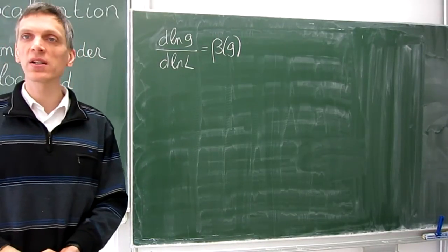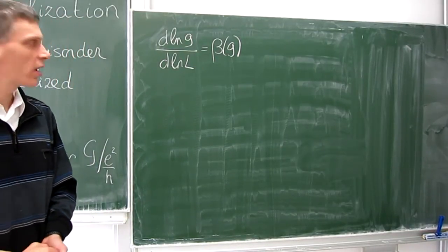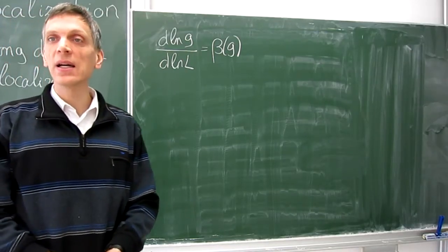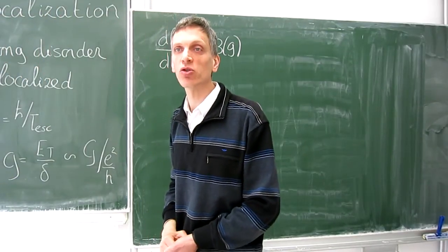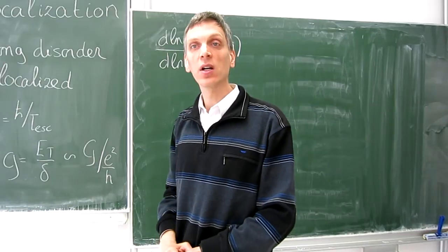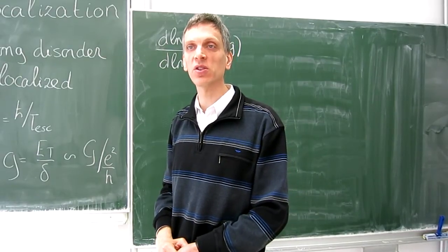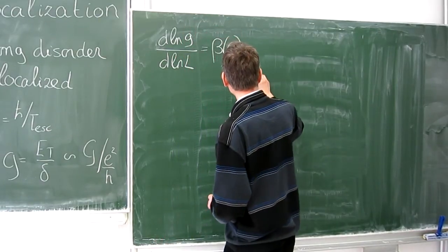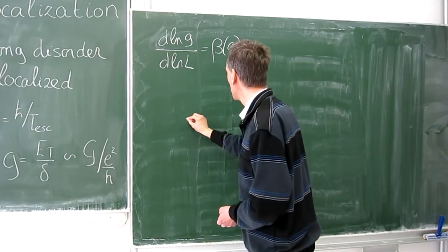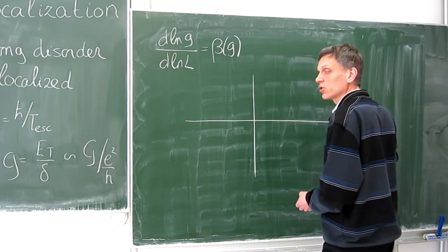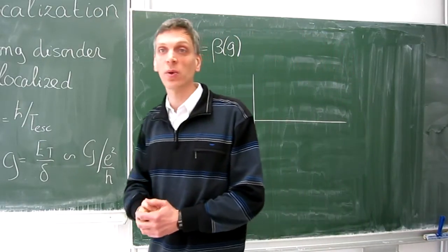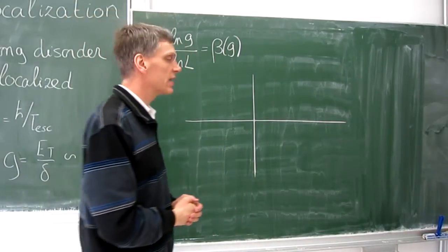How does this function beta look like? One can argue how it should look like in the limits of large and small g and then interpolate it, assuming that nothing spectacular happens in between. For large g, Drude theory tells you how g scales with L and it tells you that beta of g is d minus 2.